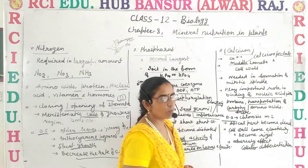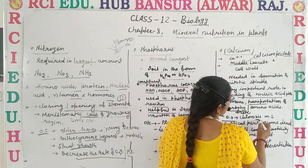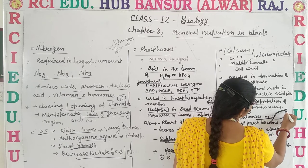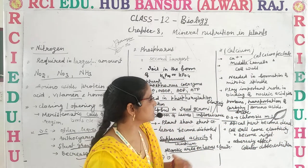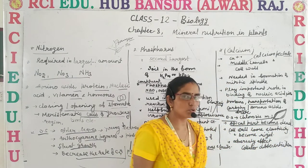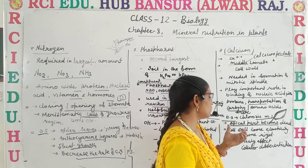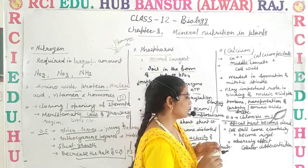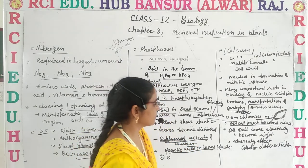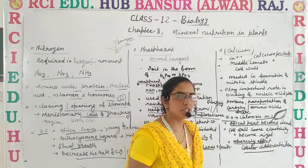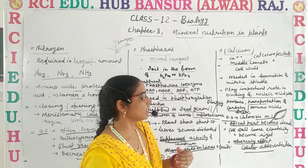Regarding the deficiency symptoms of calcium: chlorosis occurs mainly in the leaves, especially at the leaf margins — the boundary region of the leaves shows chlorosis. Apical parts become dead — the apical growing points die due to deficiency. The cell wall loses elasticity and becomes rigid and hard. It also adversely affects cellular differentiation, meaning the process by which cells move toward maturity after division is disrupted.